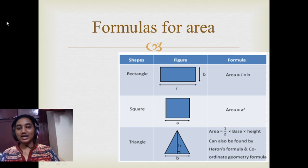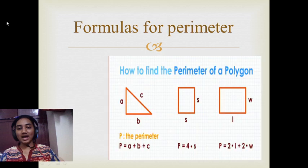Now coming to the formulas for area. Area of rectangle is length into breadth. Area of square is side into side, which is side squared. Area of a triangle is half into base into height.